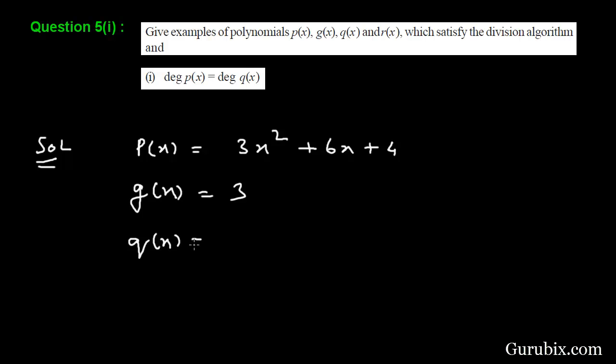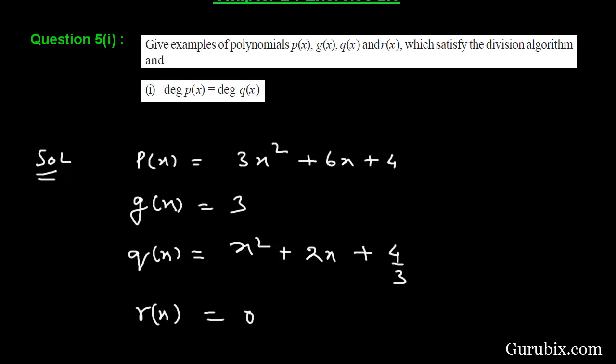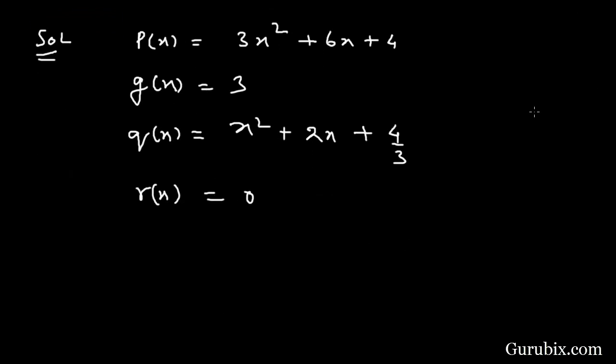And the remainder, meaning r(x), would equal 0. Let us see if all these polynomials satisfy the division algorithm or not.